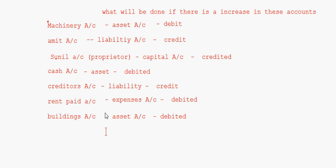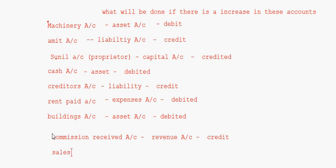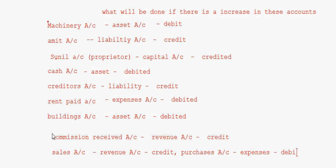Buildings account is again an asset account and increase in asset account is debited. Commission received account is a revenue account, and increase in revenue is a credit. Sales account is again a revenue account — increase in revenue account is a credit. Purchases account is an expenses account — increase in purchases account is a debit. Like this, we apply the rules of debit and credit in the modern classification of accounts.